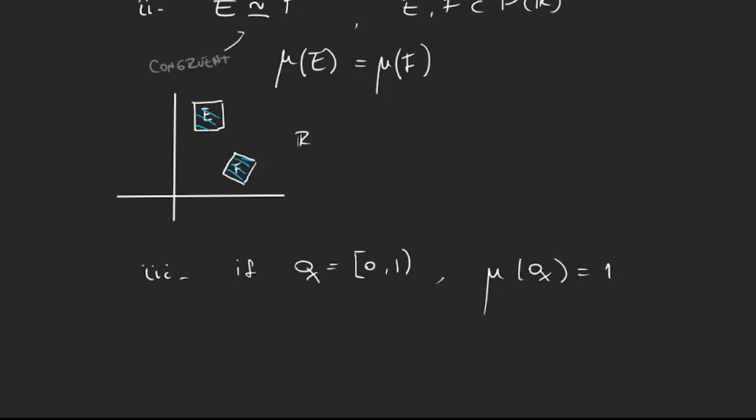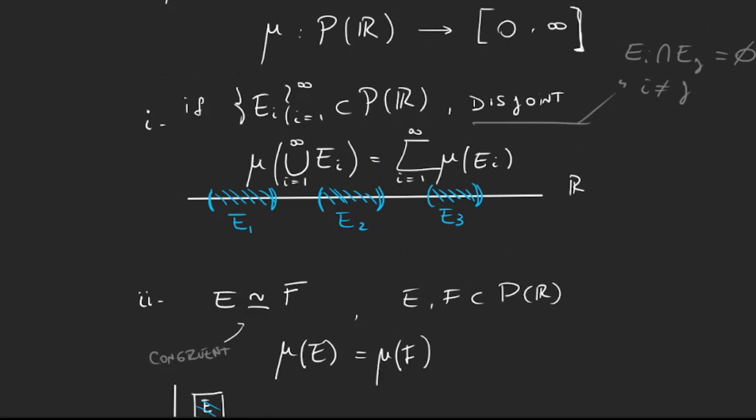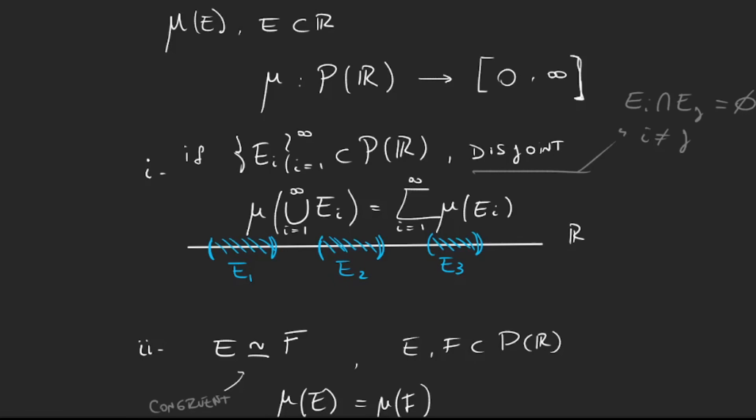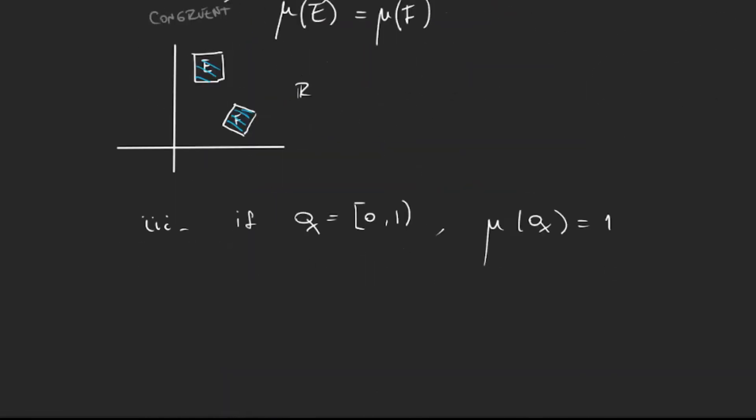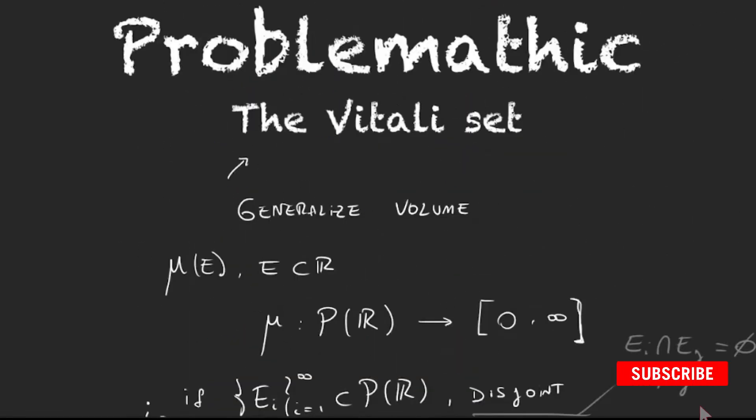When we look for a function that satisfies these three properties, we'll see we'll get a contradiction. And that is the Vitali set. We will work with this later, we will see how we get the contradiction in the next video.